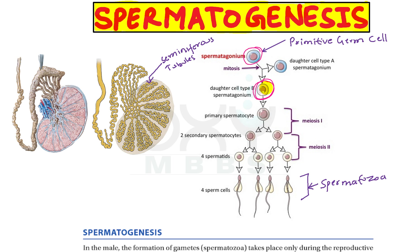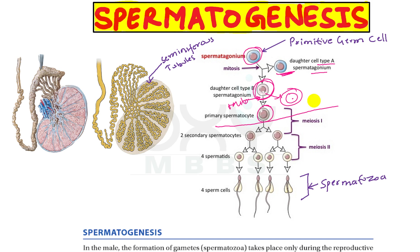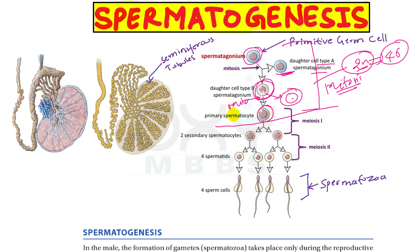Type B cells are formed from the daughter cells of Type A spermatogonium. Type B cells undergo mitosis, and the resulting cells are called primary spermatocytes. Up to this stage, only mitosis has taken place, so all these cells are 2n (diploid), containing 46 chromosomes.